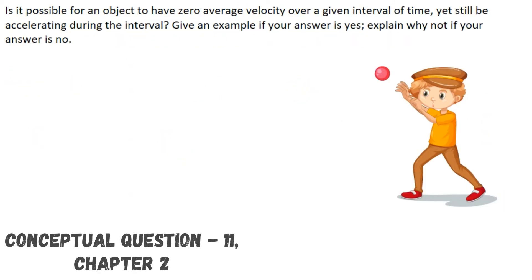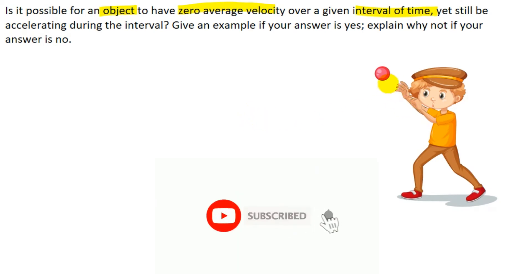Now here in this question they are asking is it possible for an object to have zero average velocity over a given interval of time yet still the acceleration is not zero for that interval of time. Now let us take an example first to understand is it possible or not. Now suppose you throw a ball in the upward direction like this. And then after reaching at the topmost point it comes back and you catch the ball. So this is the initial position and this is the final position. Both the positions are same.